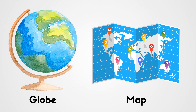The globe and the map are two fundamental tools used for understanding and navigating the world. Globes are three-dimensional spherical models of the Earth that provide a highly accurate representation of geographical features. On the other hand, maps are two-dimensional scaled representations of the Earth's surface.